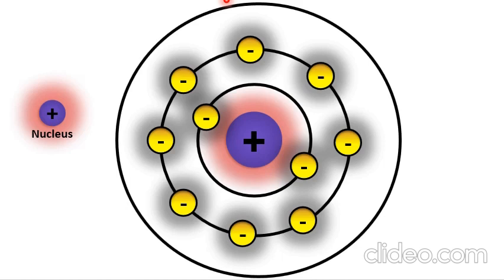The M shell is divided into three sub-shells: 3s, 3p, and 3d. The 3s sub-shell has two electrons, the 3p sub-shell has six electrons, and the 3d sub-shell has a maximum of ten electrons. So the total number of electrons in the M shell is 18.